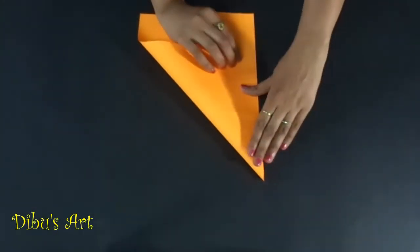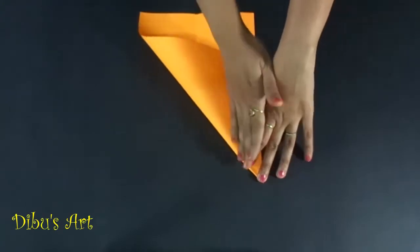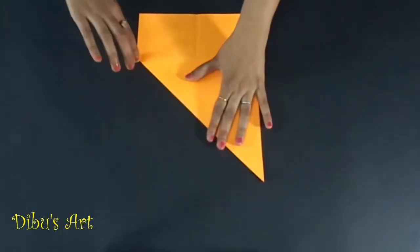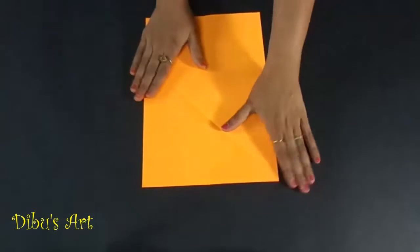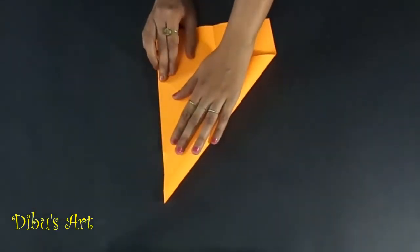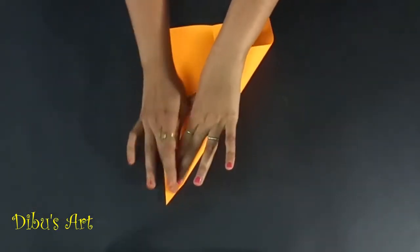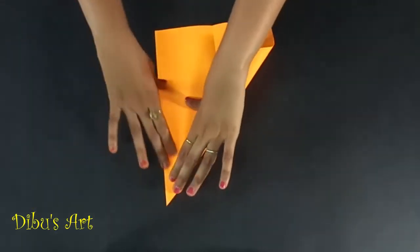Place the paper vertically. Then fold right top corner diagonally down so that upper edge meets left edge of the paper and open it. Now fold the left top corner diagonally down so that upper edge meets right edge of the paper. Open this fold too.